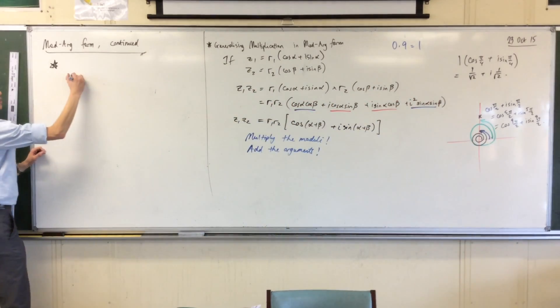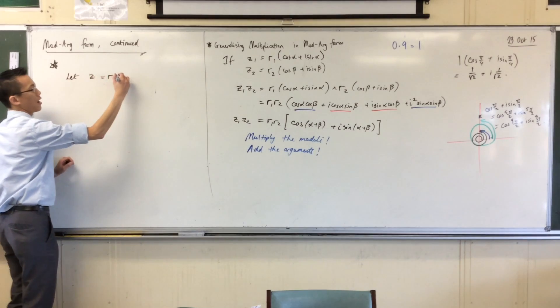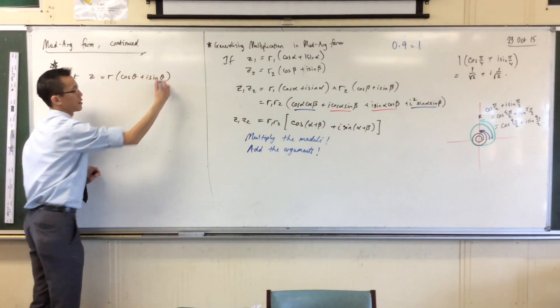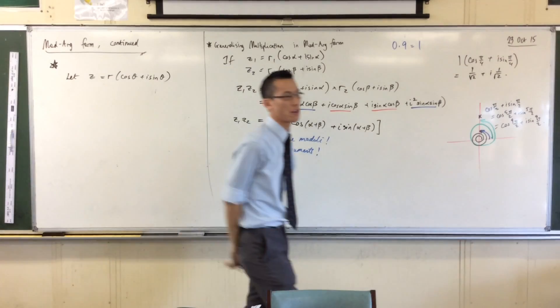So let's just come up with this guy: R cos θ plus i sin θ. So here's your generic complex number in mod arg form.